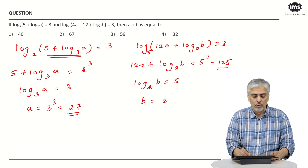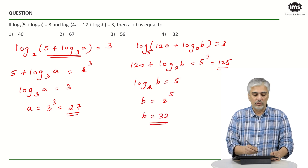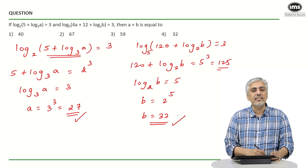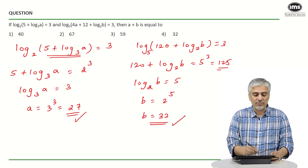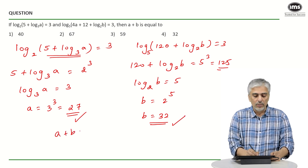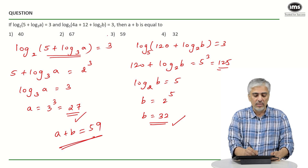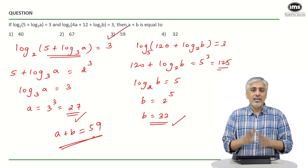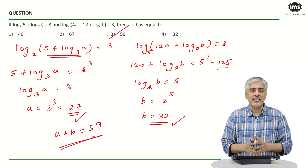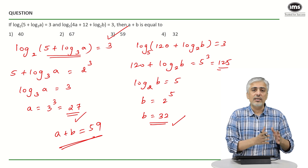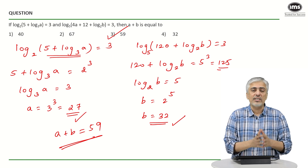Using the same property, b = 2⁵ = 32. So I have a = 27 and b = 32. They've asked for a + b, which is 27 + 32 = 59, which is the third option.